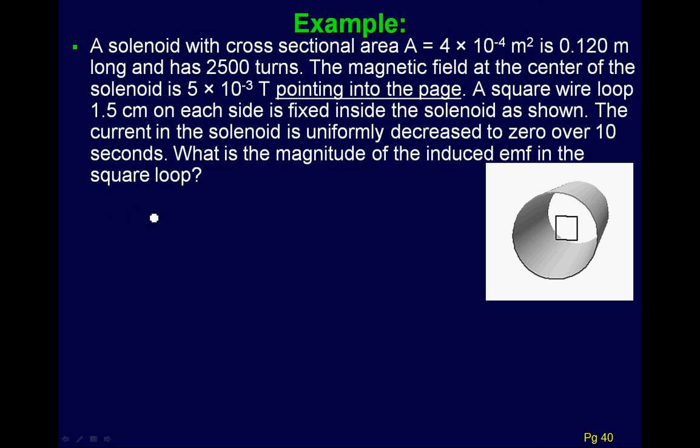A question about this example that we talked about in the review session the other day. What you're trying to find is the induced EMF in this square loop, and you're given some information about the solenoid. You're told that initially the B field is 5 times 10 to the negative 3 tesla pointing into the page, and this B field has slowly decreased to zero.